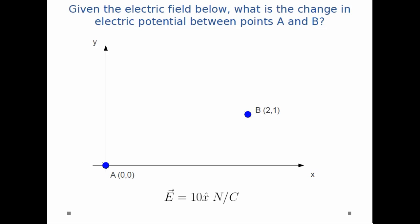Given the field below, what is the change in electric potential between points A and B?